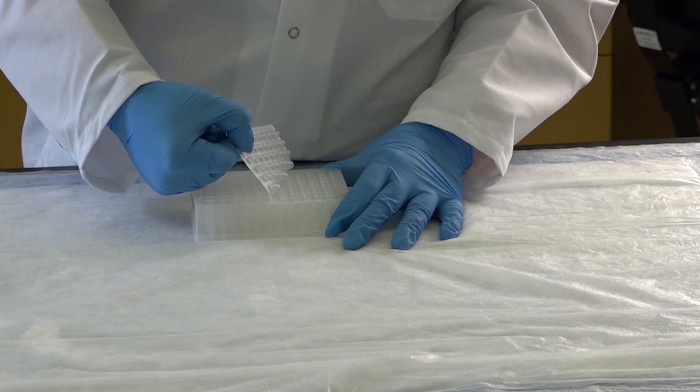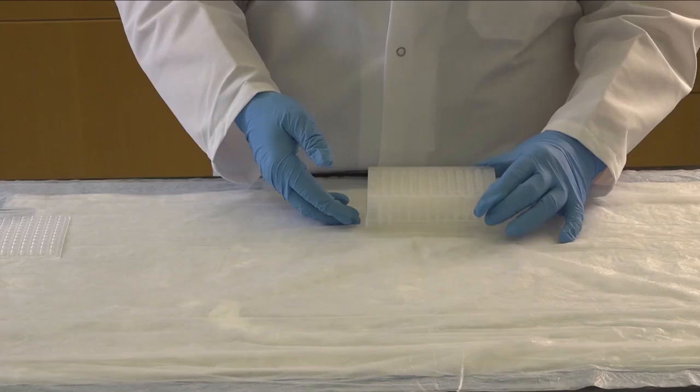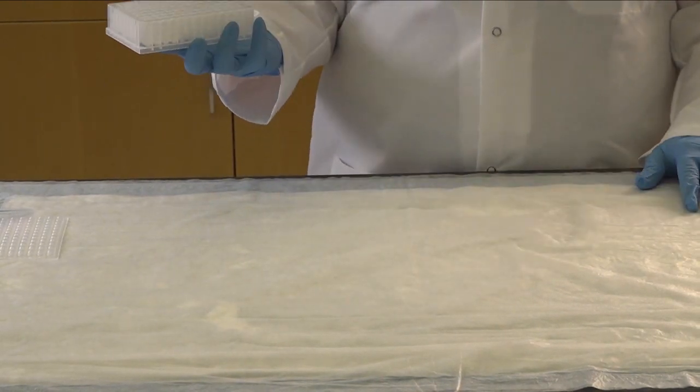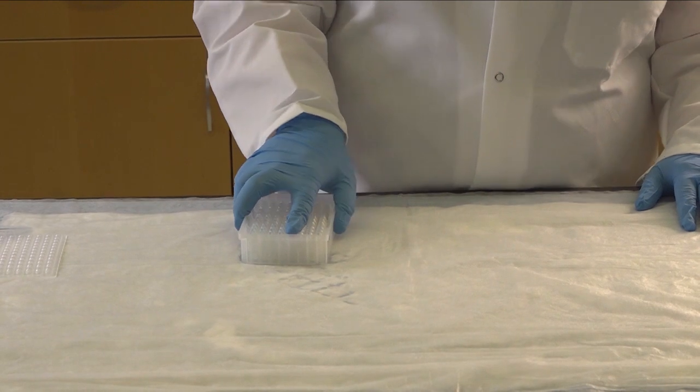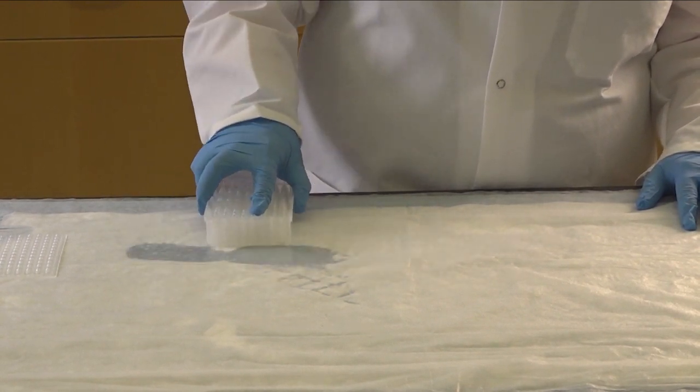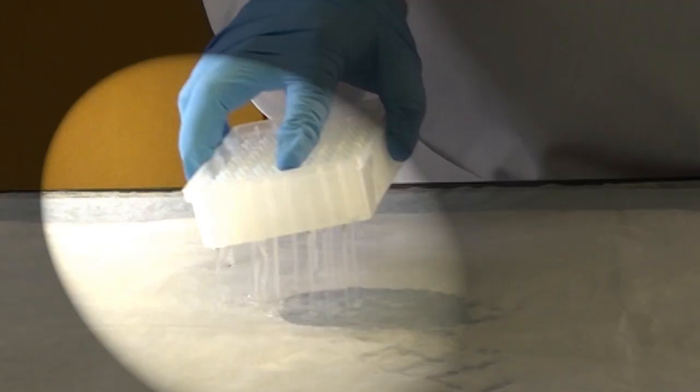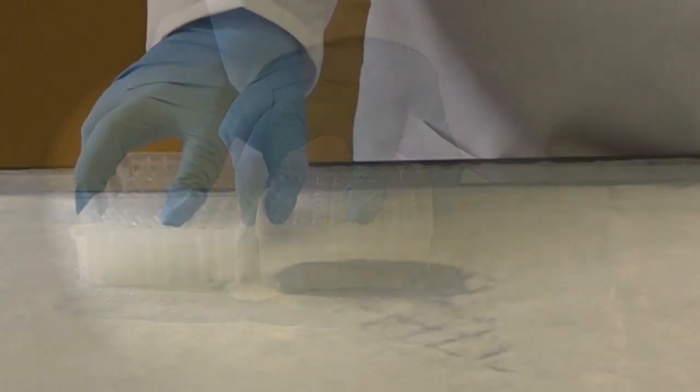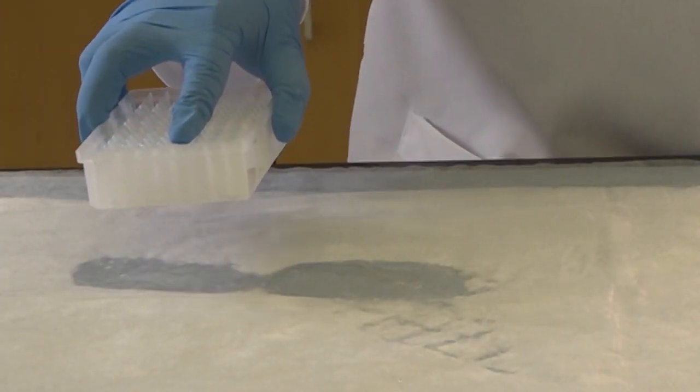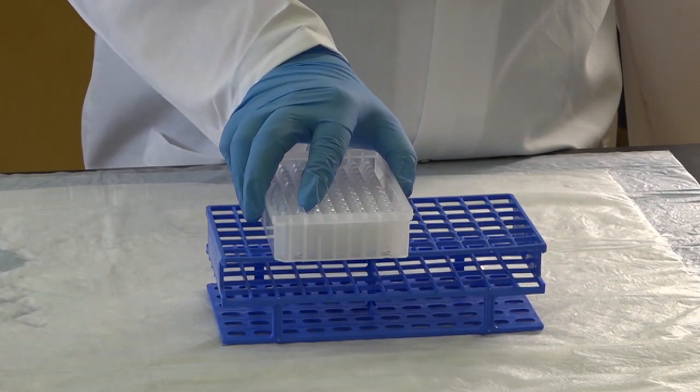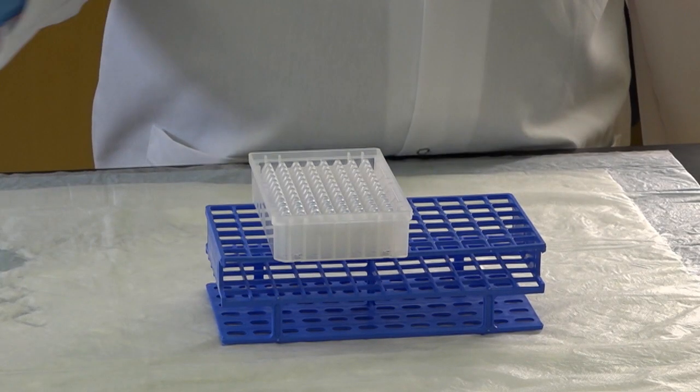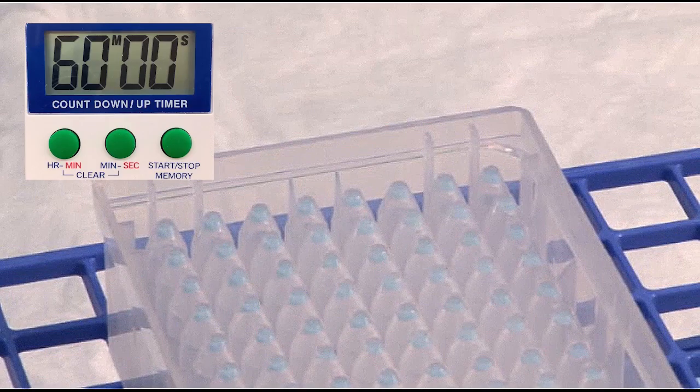To decant the supernatant, first remove the cap mat from the plate. Then, quickly and firmly invert the plate onto the absorbent bench pad in a straight up and down motion. Lift the plate straight up, allowing the supernatant to drain without entering other wells. Firmly tap the plate around the dry areas of the absorbent pad for one minute. Place the plate face down atop a tube rack. Leave to dry for one hour.